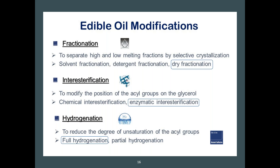Fractionation consists in the separation of high and low melting fractions by selective crystallization, and this can be done by solvent, detergent, or dry fractionation. The majority of edible oils are today fractionated using the dry process. Interesterification allows modification of the position of acid groups on the glycerol, using either a chemical or enzymatic catalyst. The enzymatic process is by far the most eco-friendly and also preserves oil quality. The degree of unsaturation of acid groups can be reduced by hydrogenation; however, partial hydrogenation is almost banned in most countries due to the health issues of trans fatty acids.